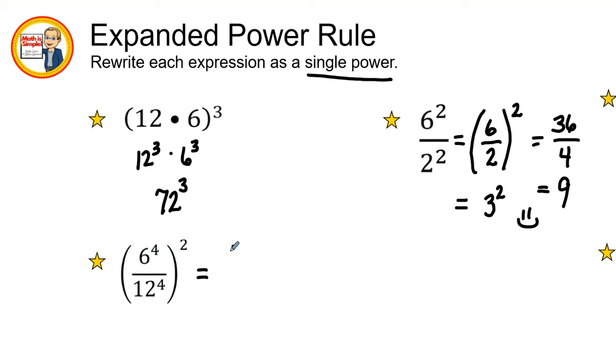And six over 12 is one over two. So that's one to the fourth power over two to the fourth power, all raised to the second power.